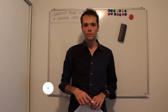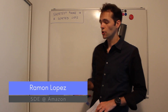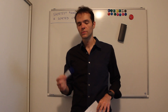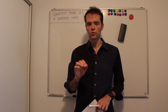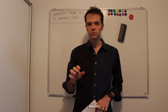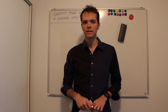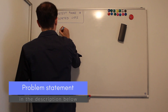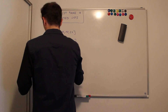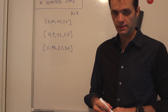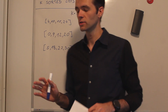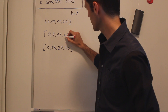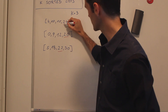Let's talk about the problem statement. It says 'Shortest Range in K Sorted Lists.' You're given K lists which are sorted and you're supposed to find the shortest range where this range covers at least one number of every list. Let's do an example. We could look at this and find it out intuitively by seeing 20, 22, and 24.